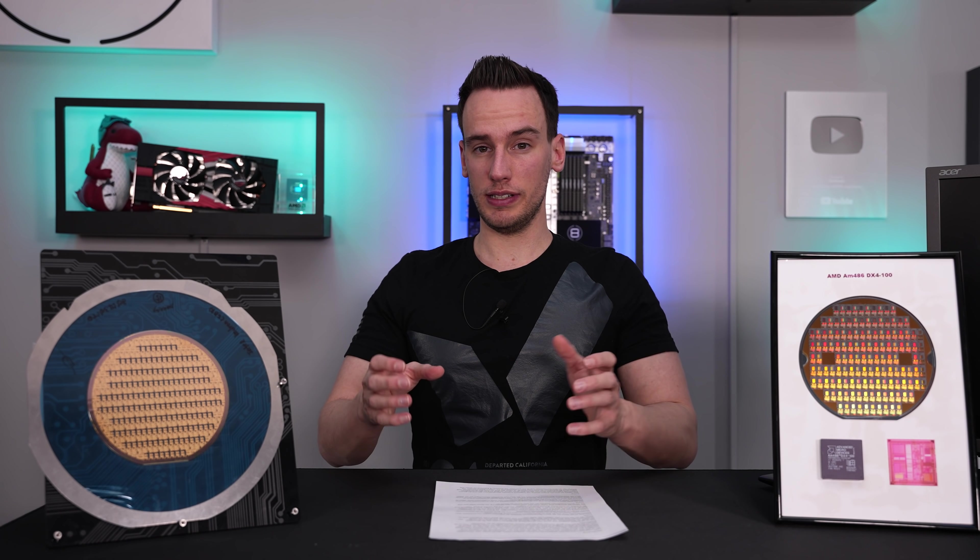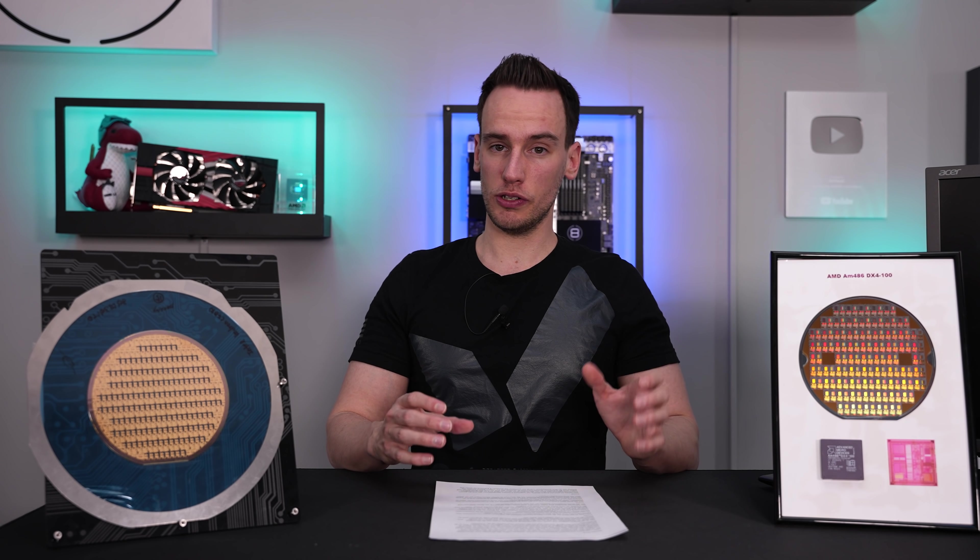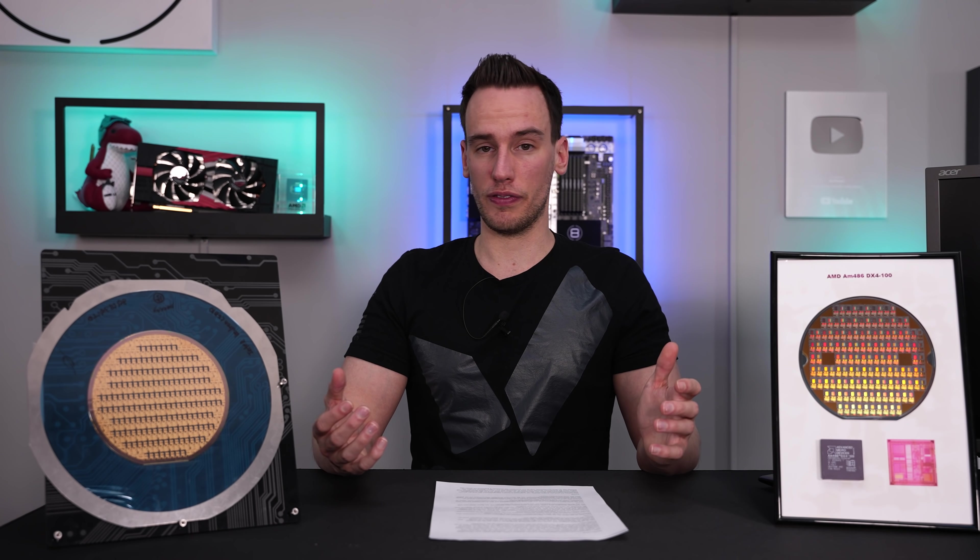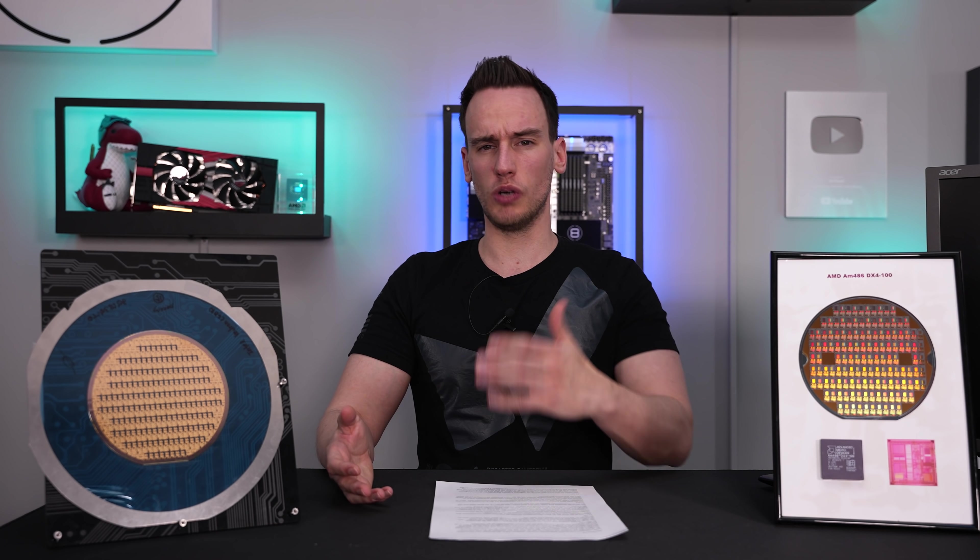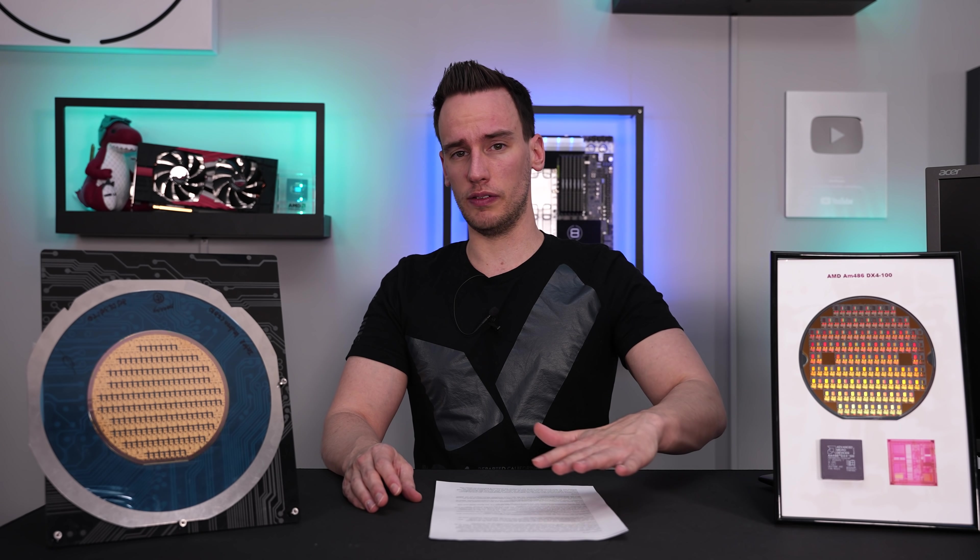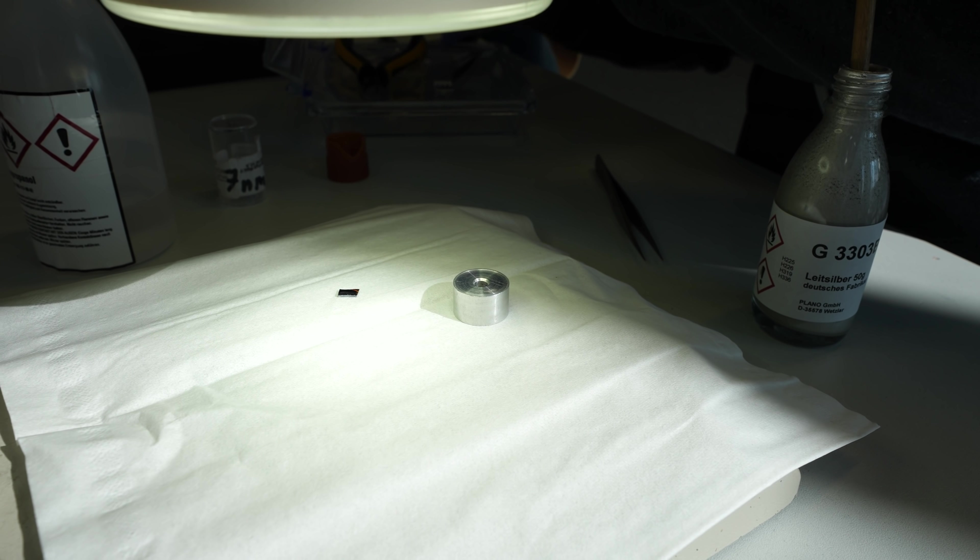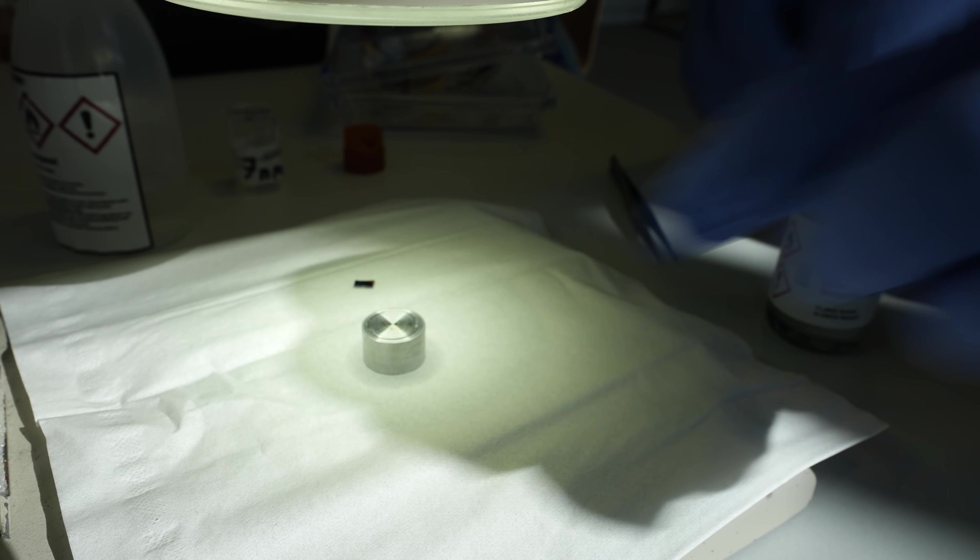In visiting Kleindiek we are using this very specific technique to analyze a single TSMC 7nm transistor that could be like a Ryzen 5000 CPU. The CPU is already prepared, which means grinding down the chip to the lowest level of the transistors to remove the top metal layers and all of that, and then we can access a single transistor and analyze it.